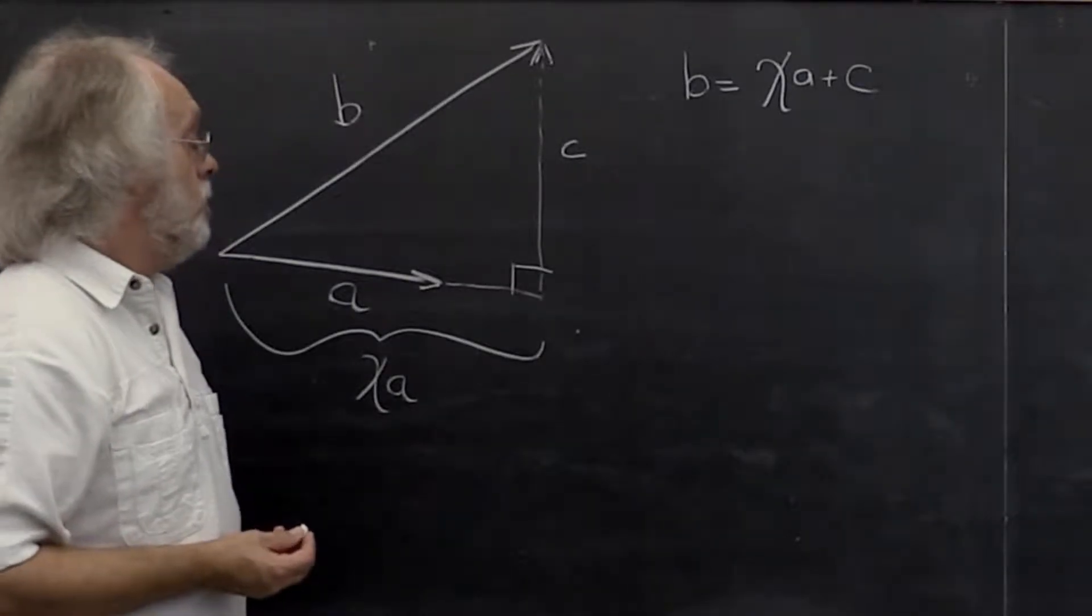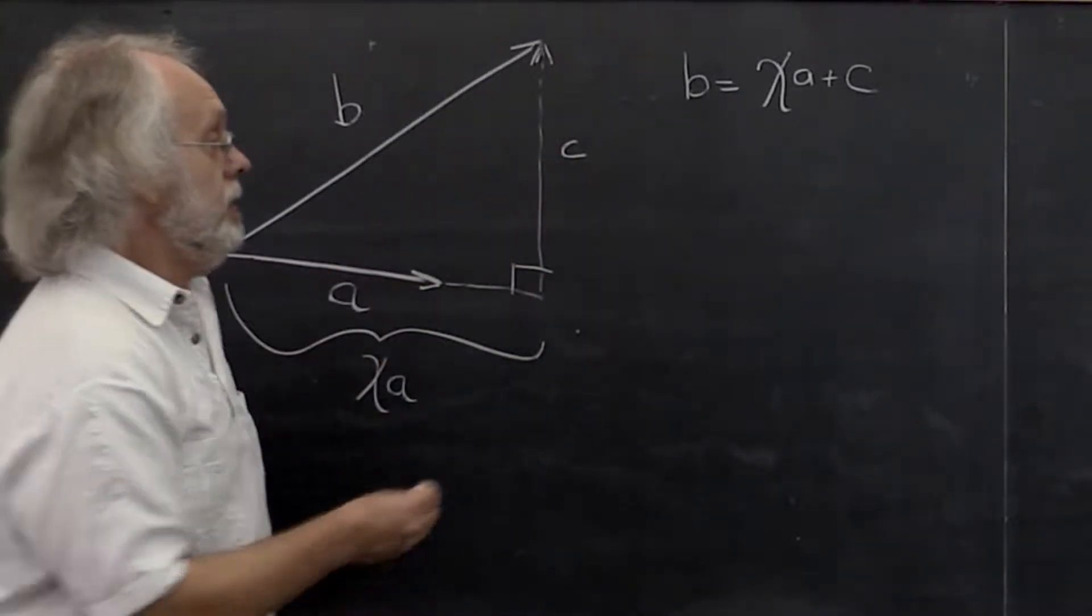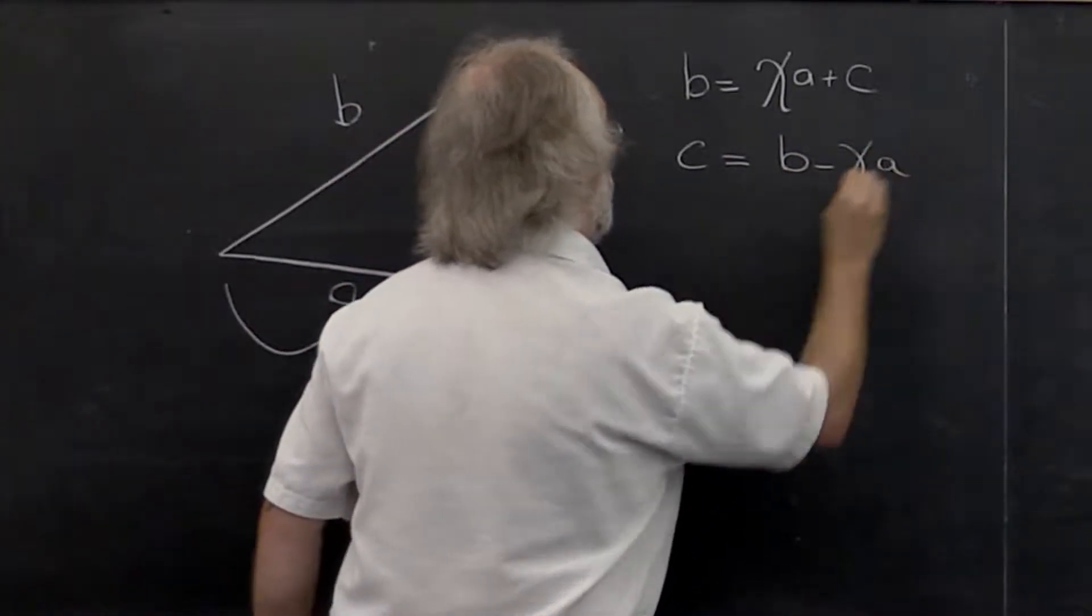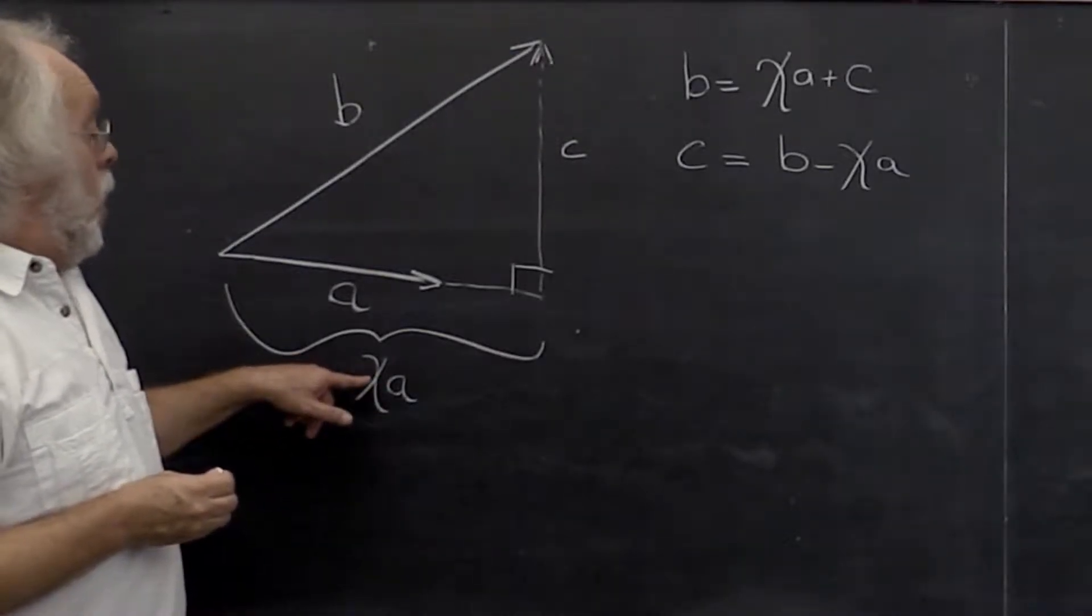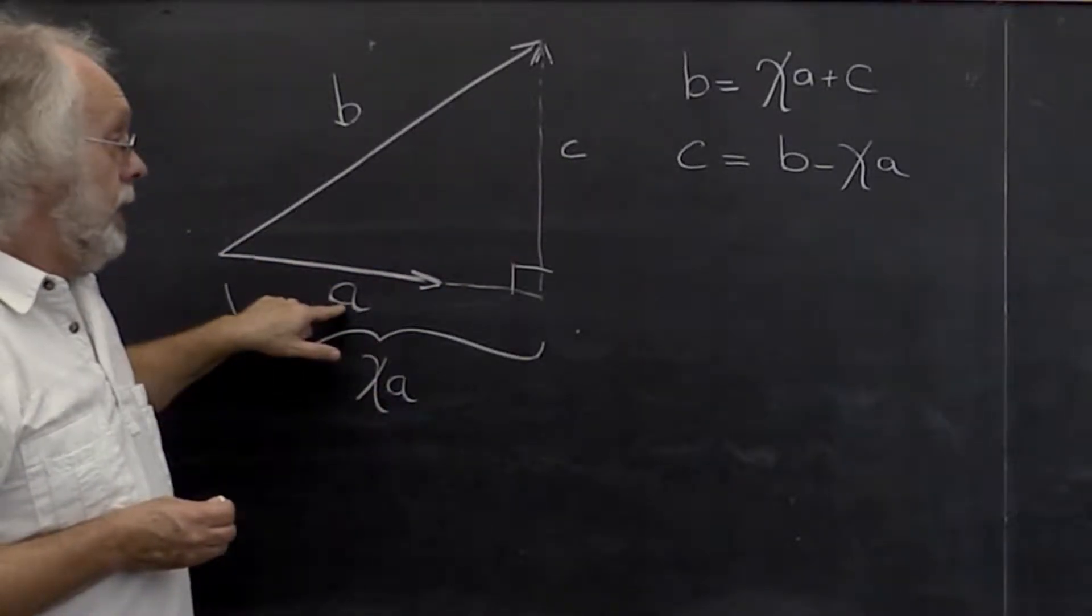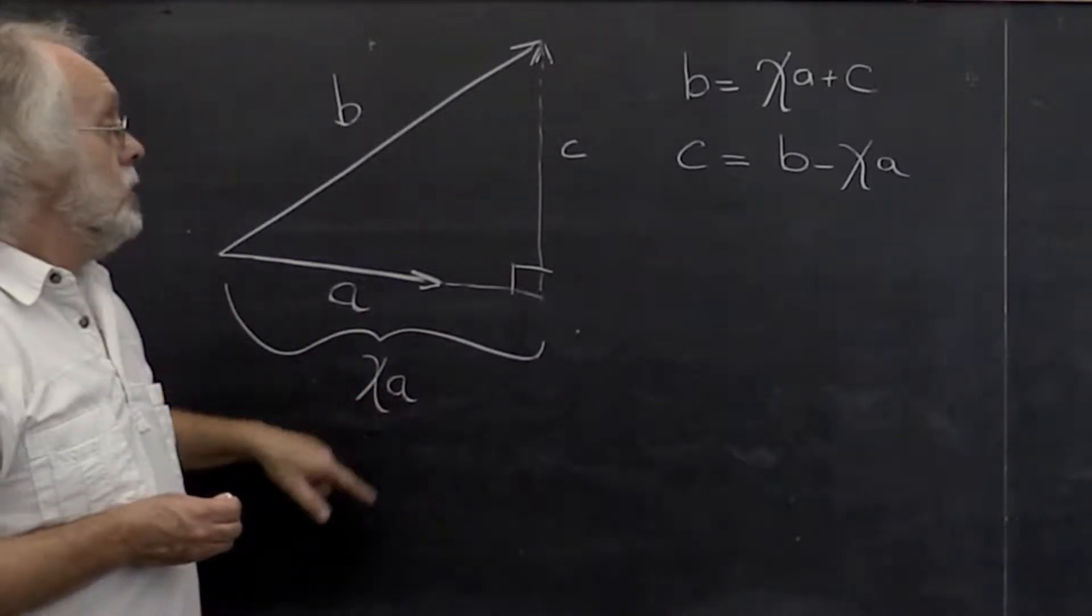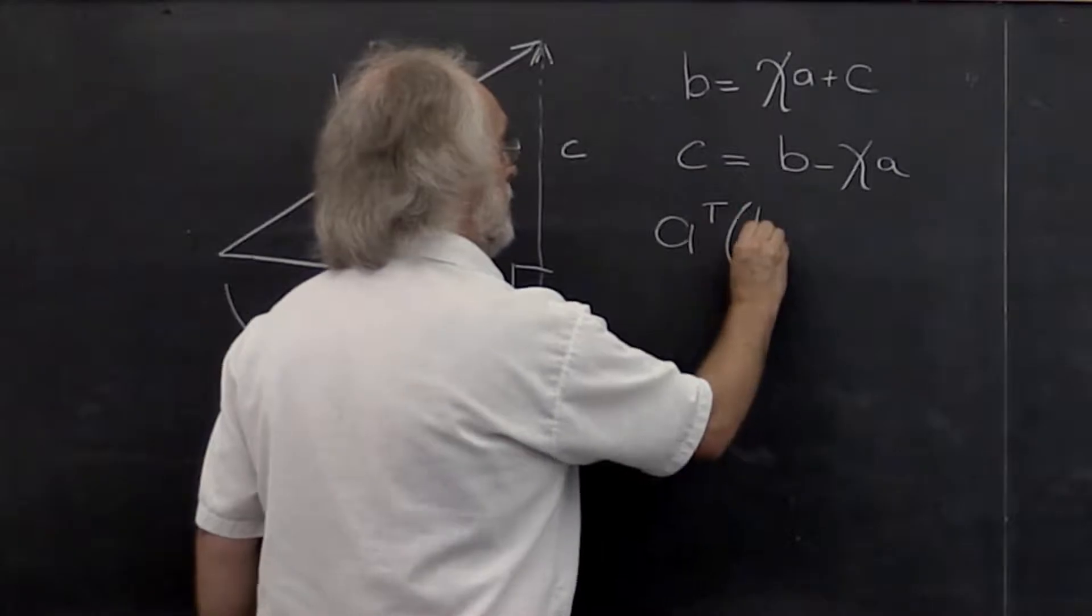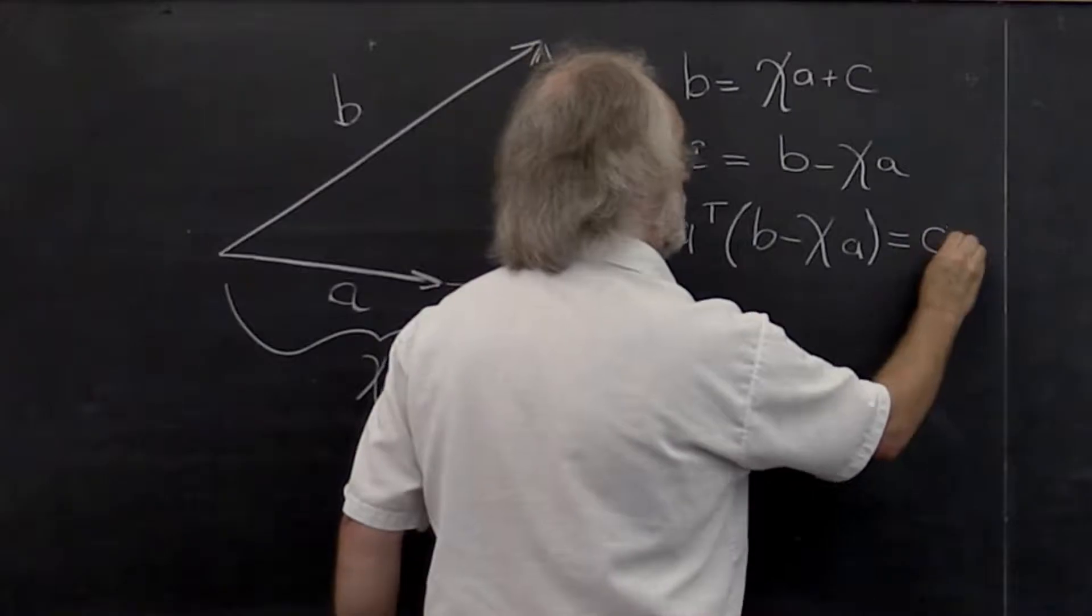We also know, therefore, that C is equal to B minus chi times A. We know that C is orthogonal to A and therefore to chi times A. So we can then look at A transpose times B minus chi times A, and we know that that's equal to zero.